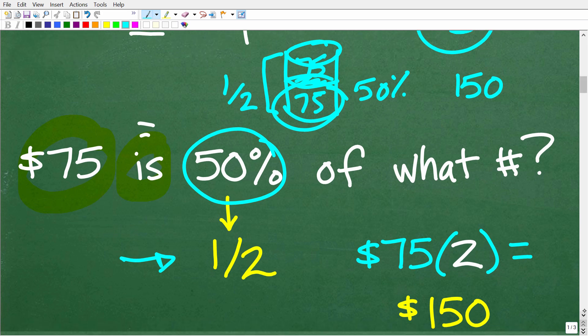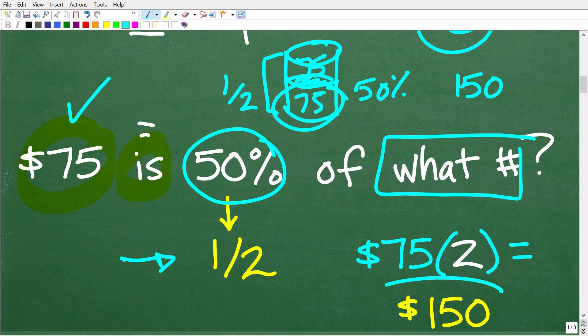That's probably what a lot of you did. You said, if 75 is 50% or one half of some number, just double this number and you'll get the right answer. And that is correct. 75 times 2 is 150 or $150. This is what I would call a logical, common sense way to approach this problem.